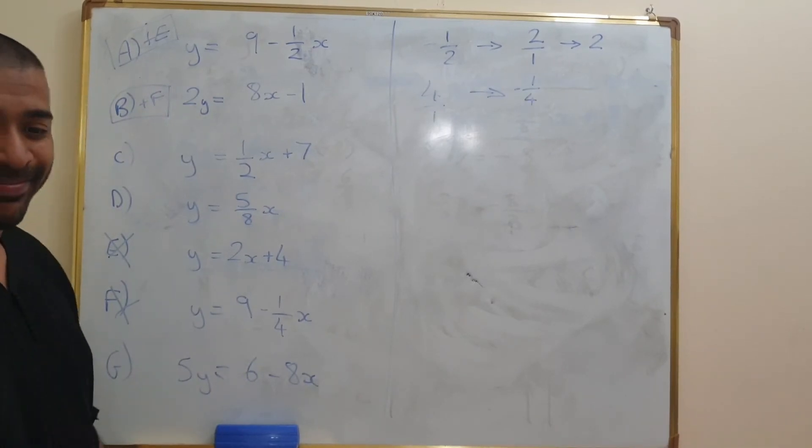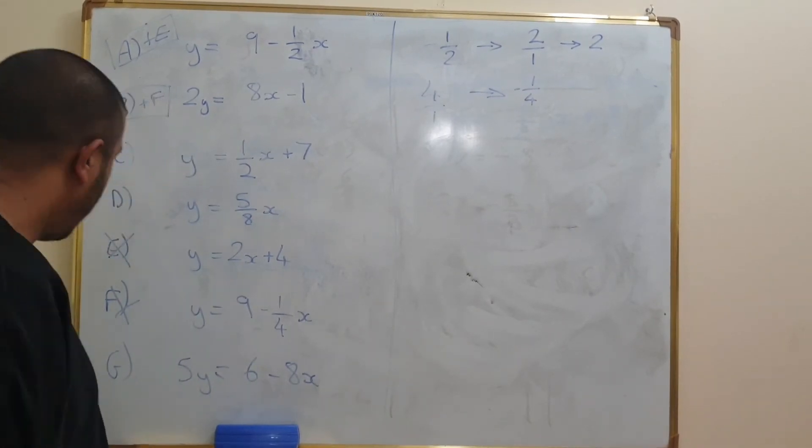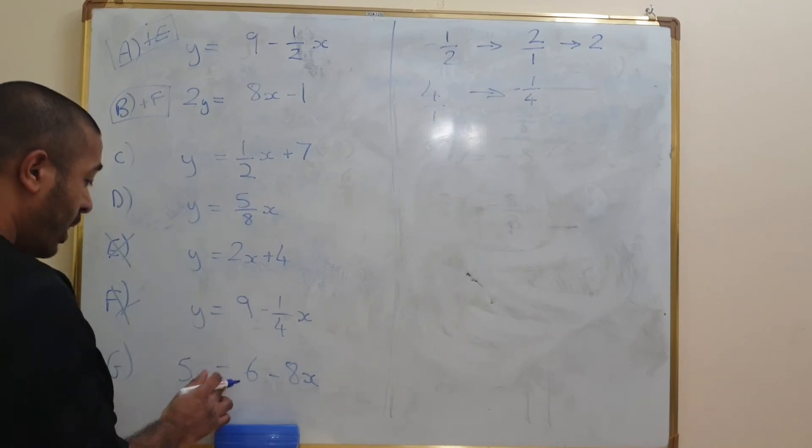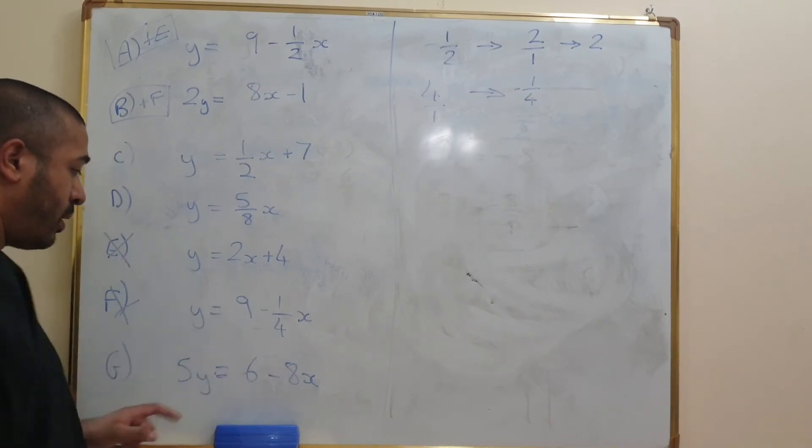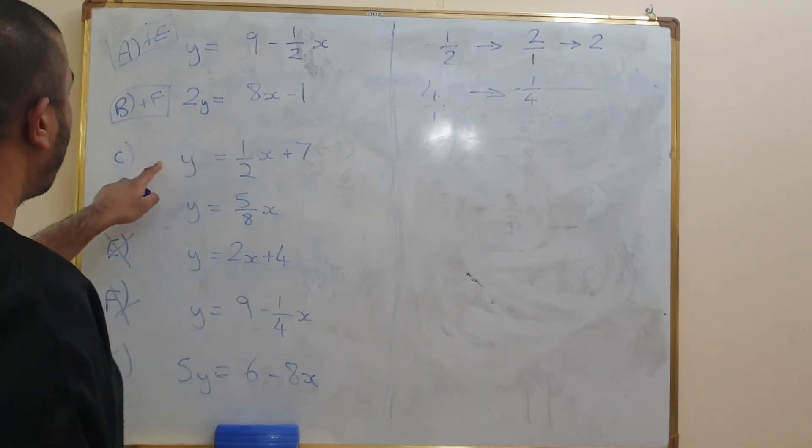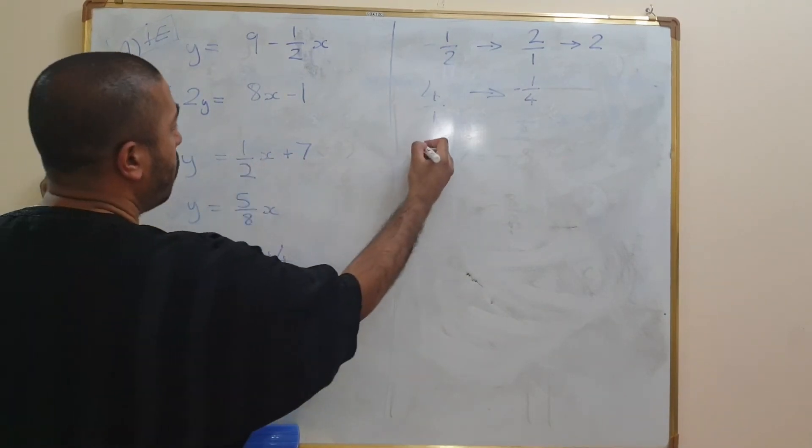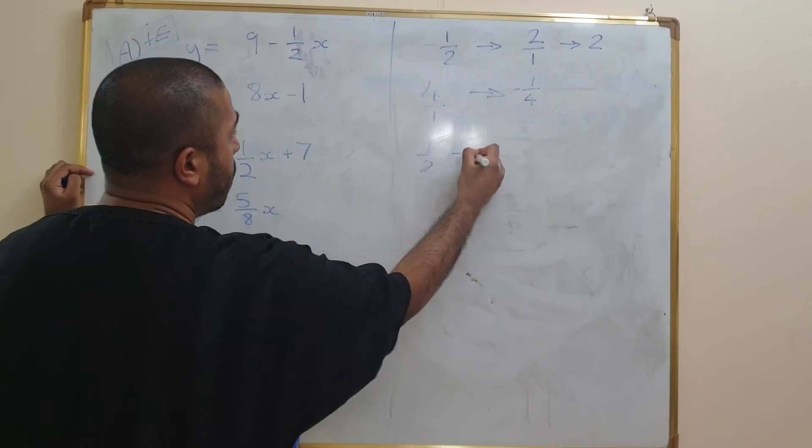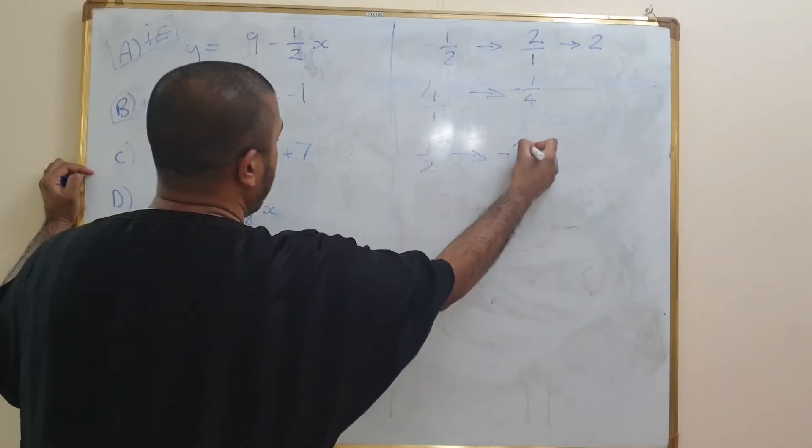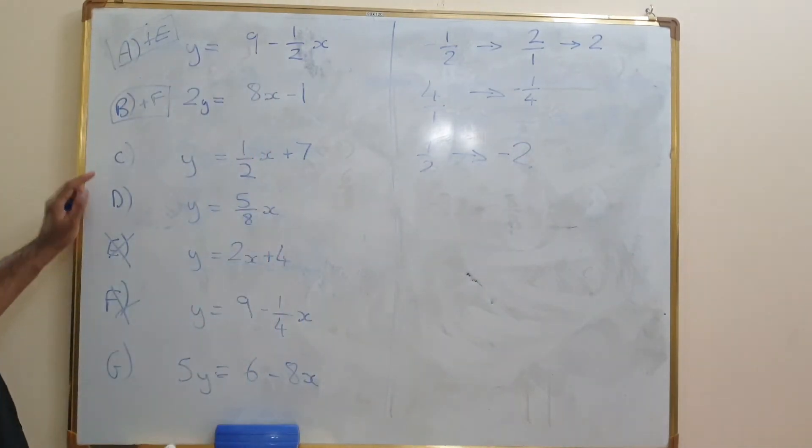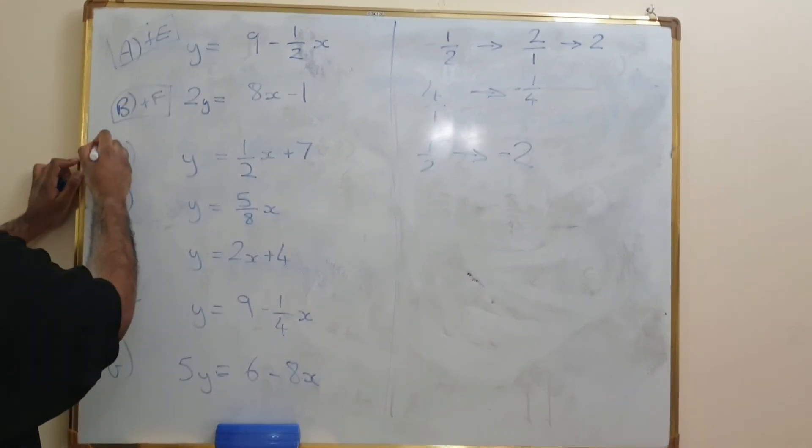G is 5Y equals 6 minus 8X. So let's have a look at C over here. The negative reciprocal of that is going to be, so 1 half. Negative reciprocal of that is minus 2. Do we have minus 2 anywhere? No, we don't. So hold fire with this one. Perhaps it is C.